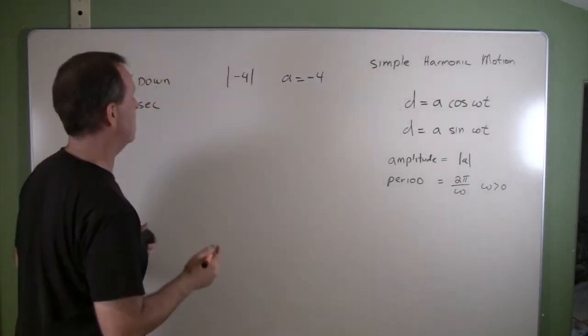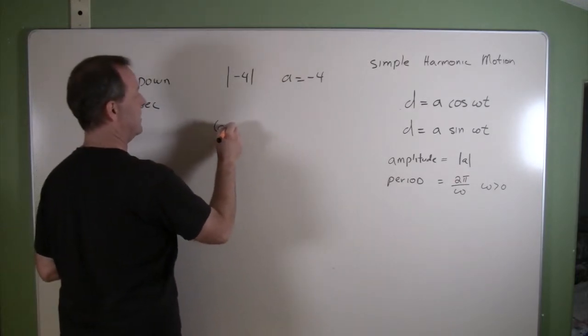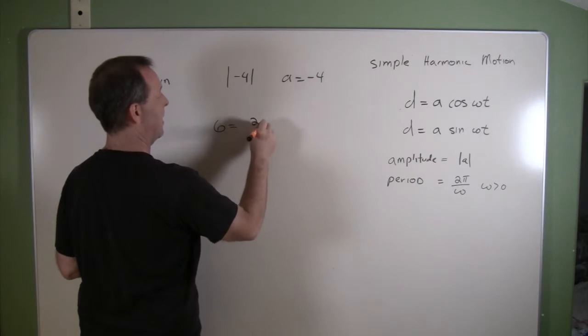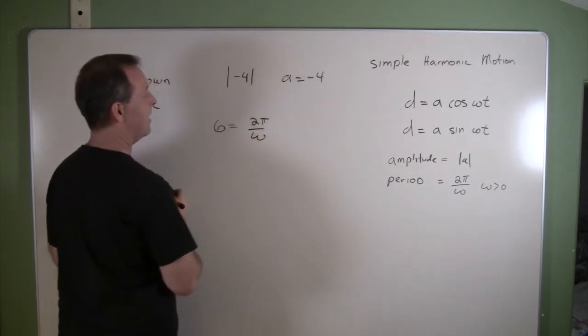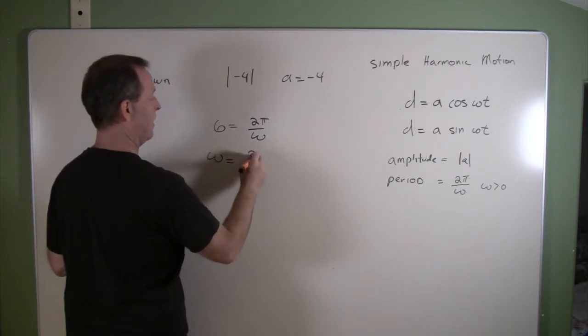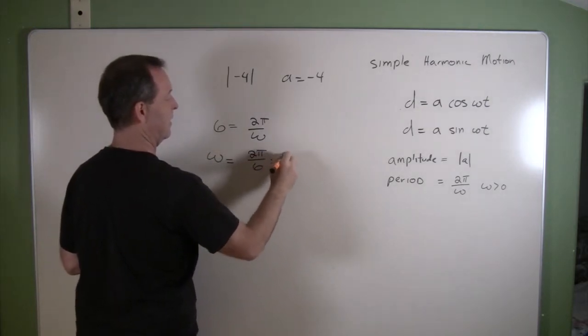six seconds for this to occur. So over six seconds is how long a period happens. That equals 2π over my omega. I want to solve for omega, so that's 2π over 6, and that reduces down to π/3.